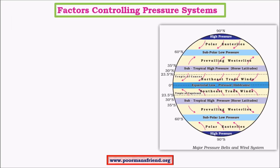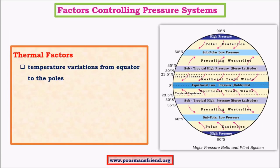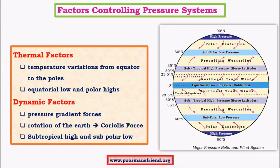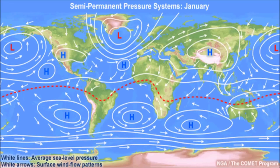To summarize: two factors control pressure systems — thermal and dynamic. Thermal factors produce equatorial low and polar highs, driven by very high and very low temperatures respectively. Dynamic factors like blocking effect and Coriolis force produce subtropical high and subpolar low pressure belts. In real terms — not ideal cases — pressure systems are discontinuous because the northern hemisphere has greater land mass, receiving more heat in summer and greater cold in winter, while the southern hemisphere is ocean-dominated with slower temperature changes.